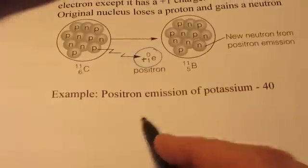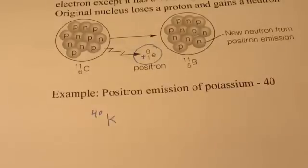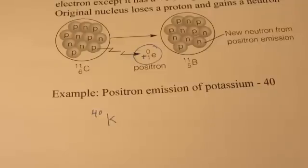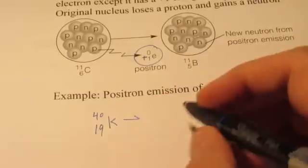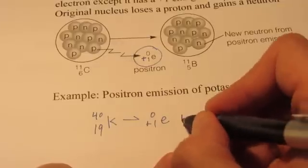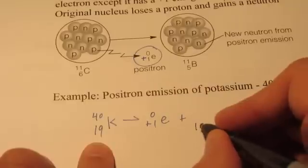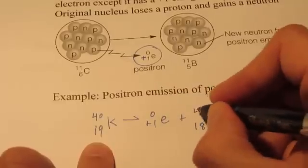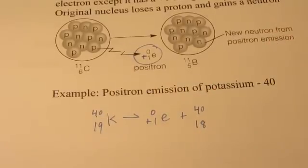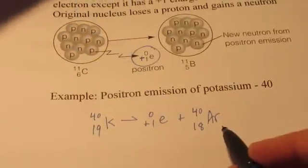Well, let's practice with the positron emission of potassium-40. So we have potassium with a mass number of 40. And the atomic number of potassium is 19. And we're going to kick out a positron. 0 over positive 1 e. And what do we end up with? Well, let's see. We have a proton that turns into a neutron. So the proton is going to go down to 18. The mass number will stay the same. The atomic number 18 is the element argon. So we transmutate a potassium atom into an argon atom.